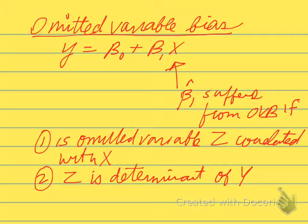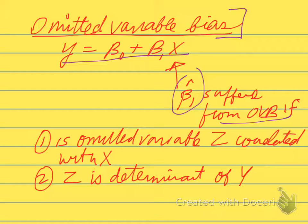I would like to talk a little bit more today about omitted variable bias. In the single variable case, we have a regression like y equals beta0 plus beta1x, and we might imagine that our estimate of beta1, beta1 hat, suffers from omitted variable bias.